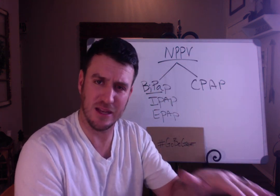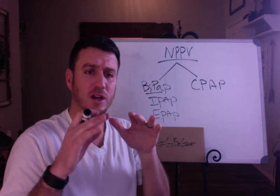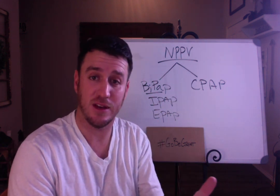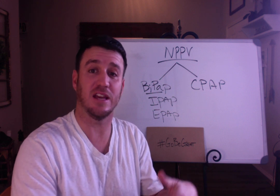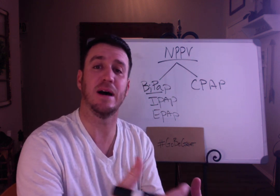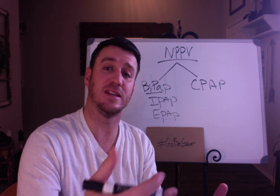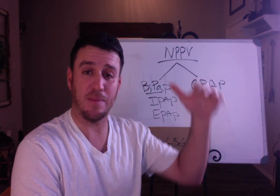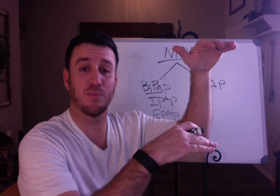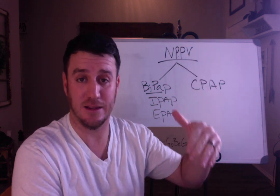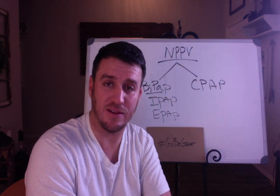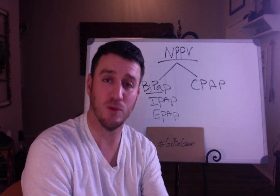Your pressure support is going to be the difference between your IPAP and your EPAP. So if you have an EPAP setting of 5 and an IPAP setting of 15, your pressure support is the difference — IPAP of 15 minus EPAP of 5 equals a pressure support of 10. And that's what's going to drive your CO2 removal.